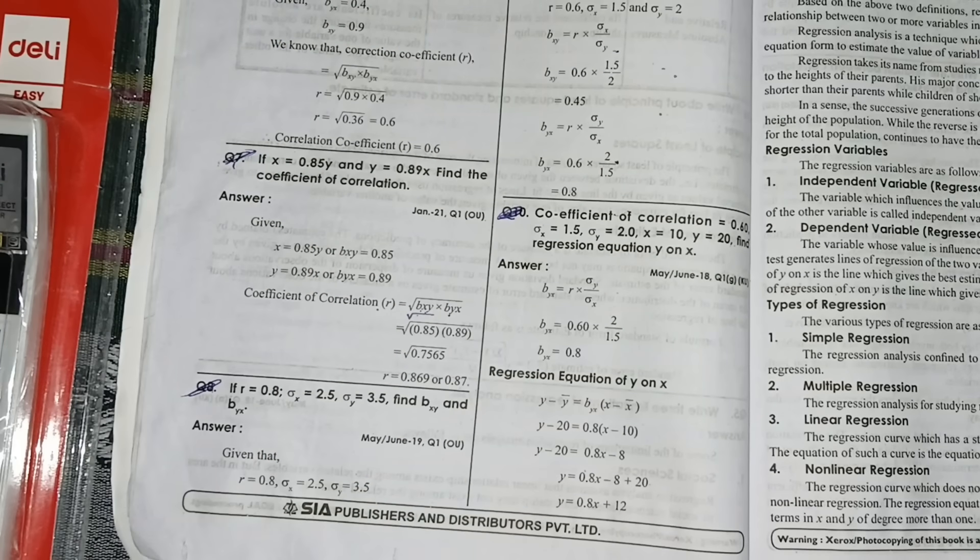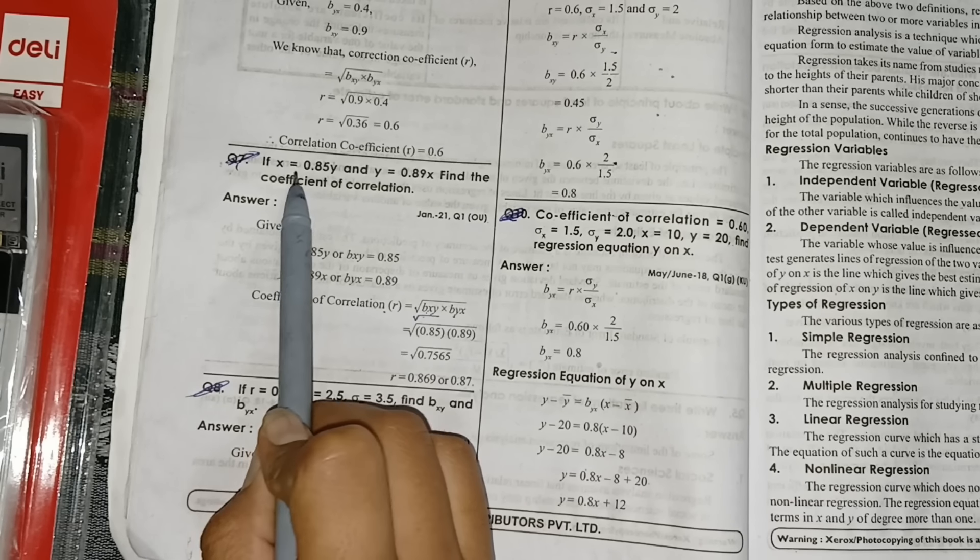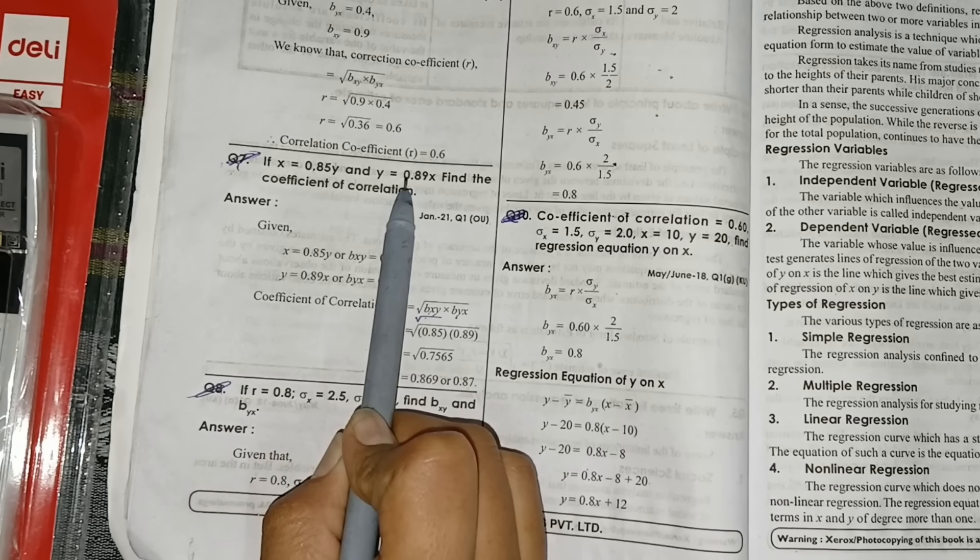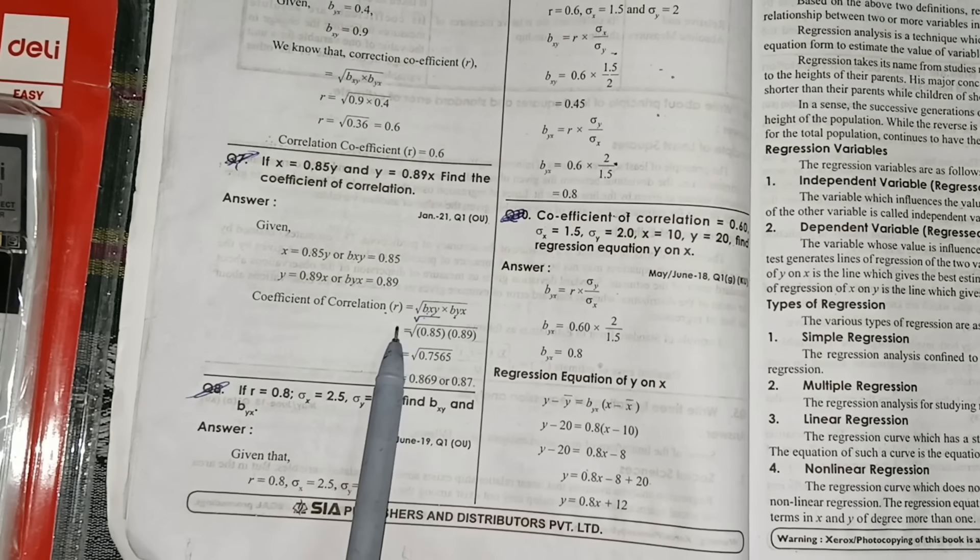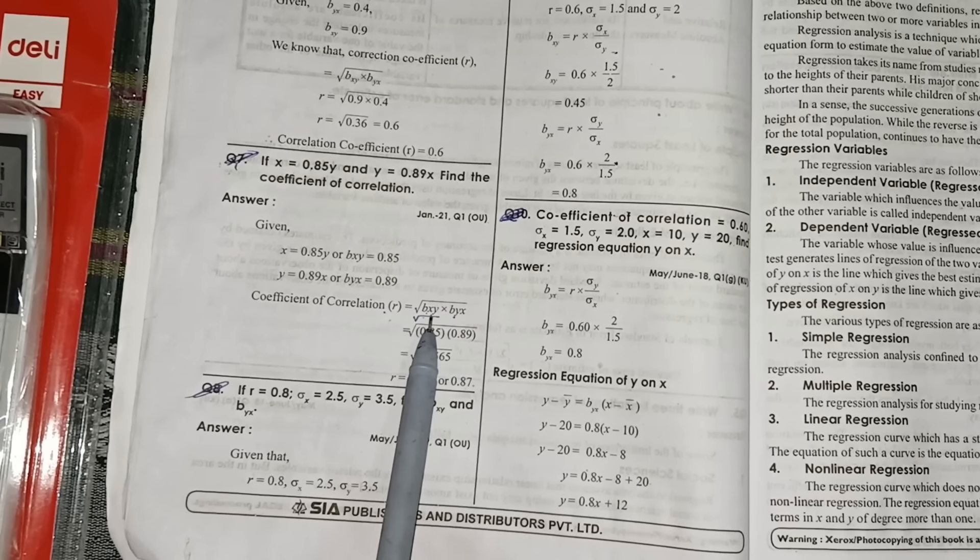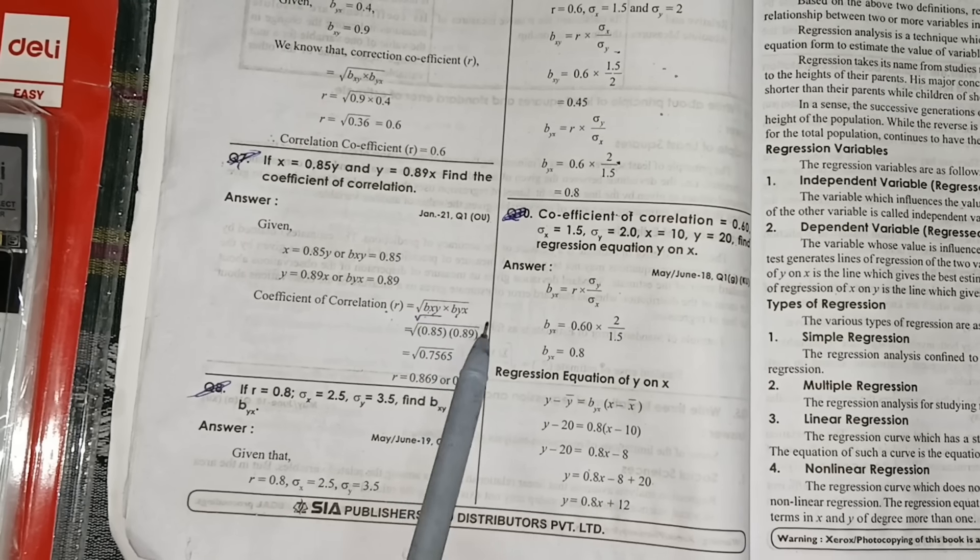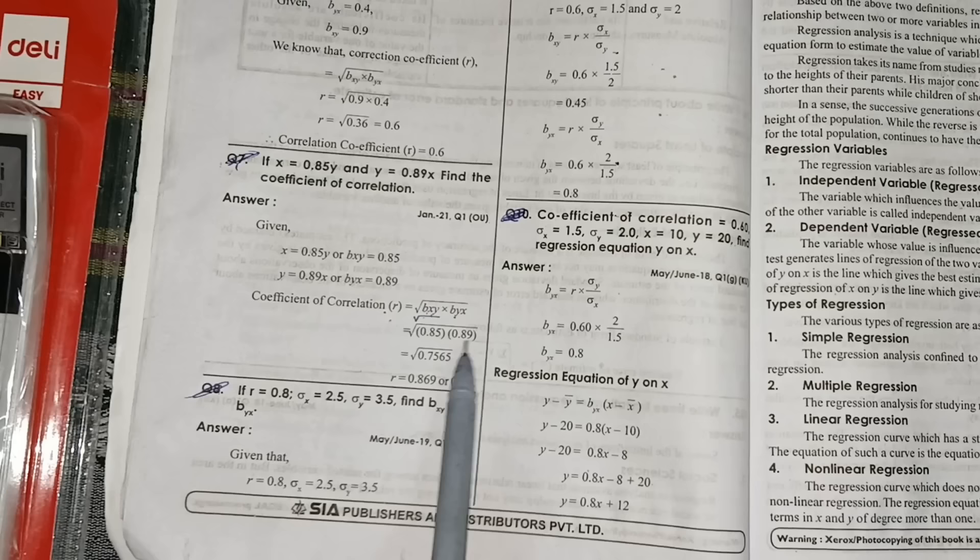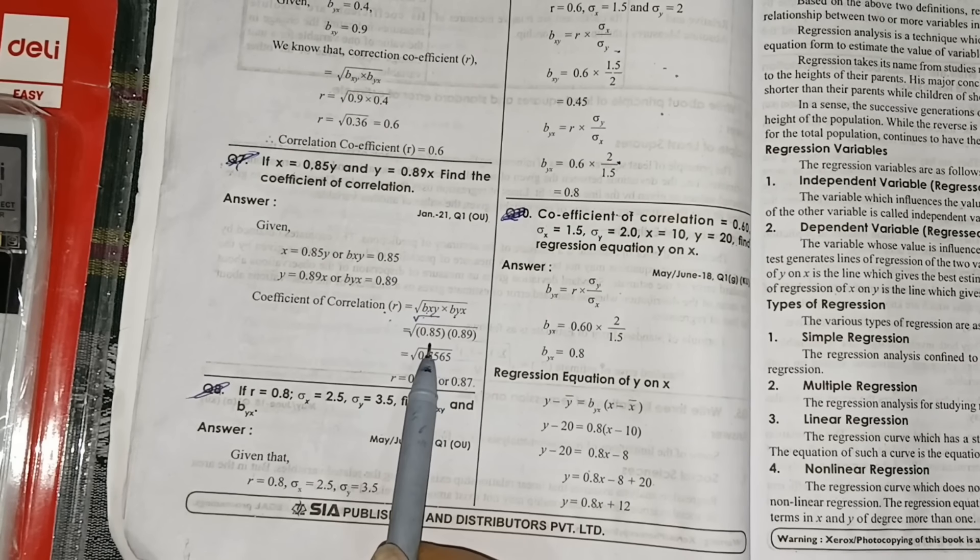Here you see my seventh question: if bxy is equal to 0.85 and byx is equal to 0.89, find the coefficient of correlation. They have given bxy 0.85, byx 0.89. Coefficient of correlation formula: under root bxy into byx.